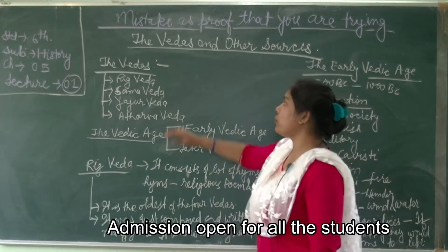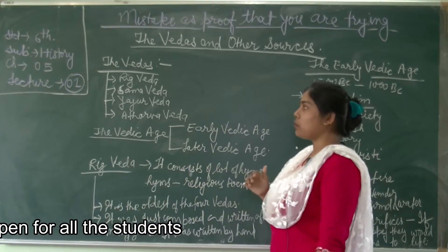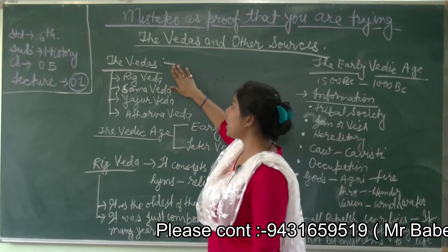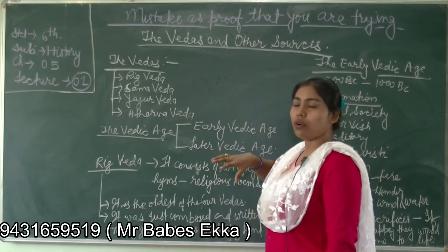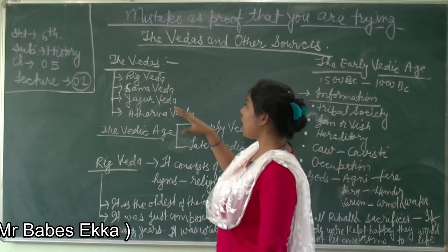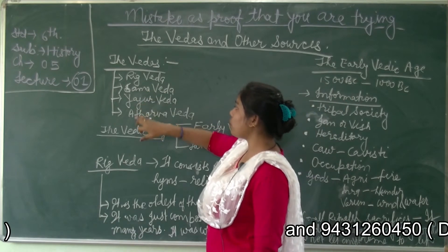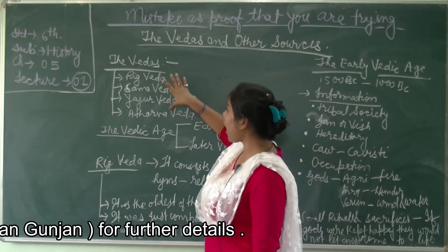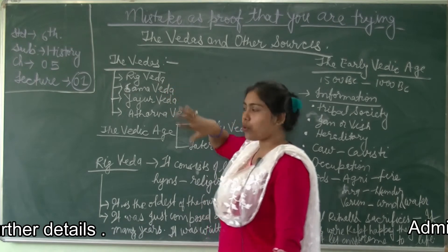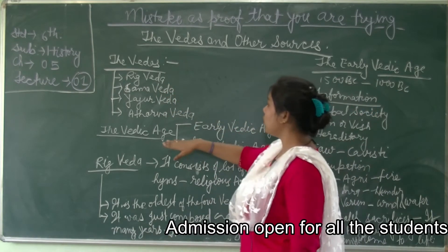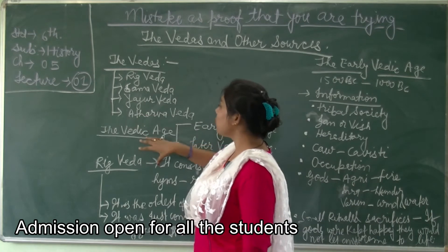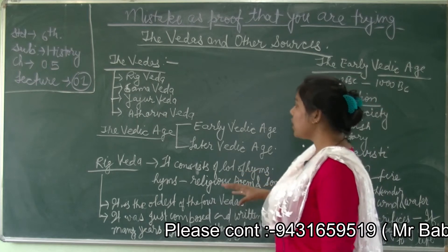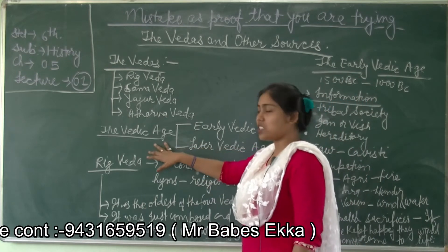Most of the information we have about the Aryans came from the Vedas. The Vedas are a set of four books: the Rig Veda, Sam Veda, Yajur Veda, and Atharva Veda. Together these are called the Vedas, and this age is called the Vedic Age because all four Vedas were written during this period.